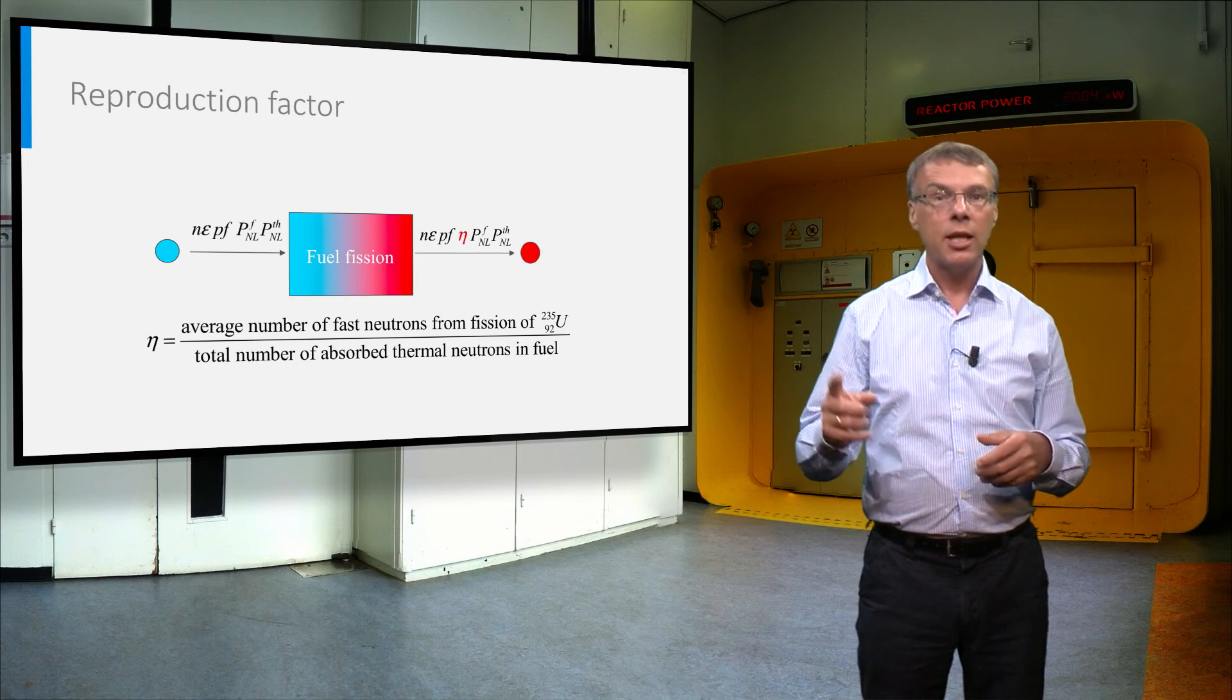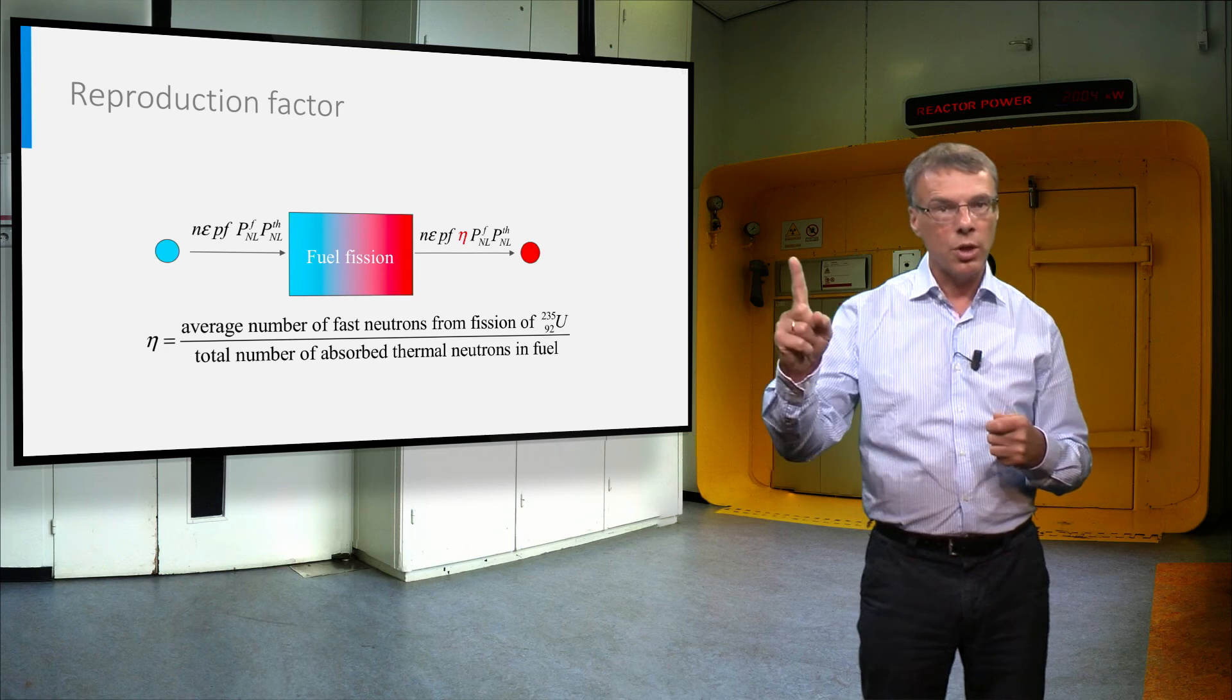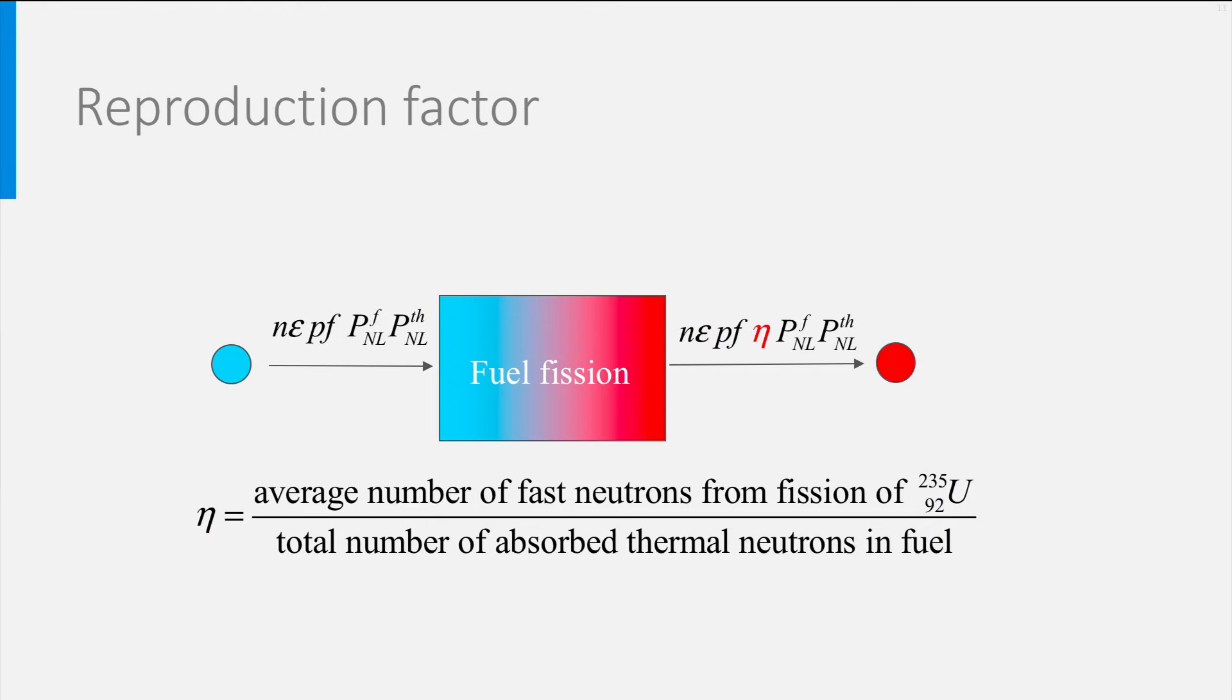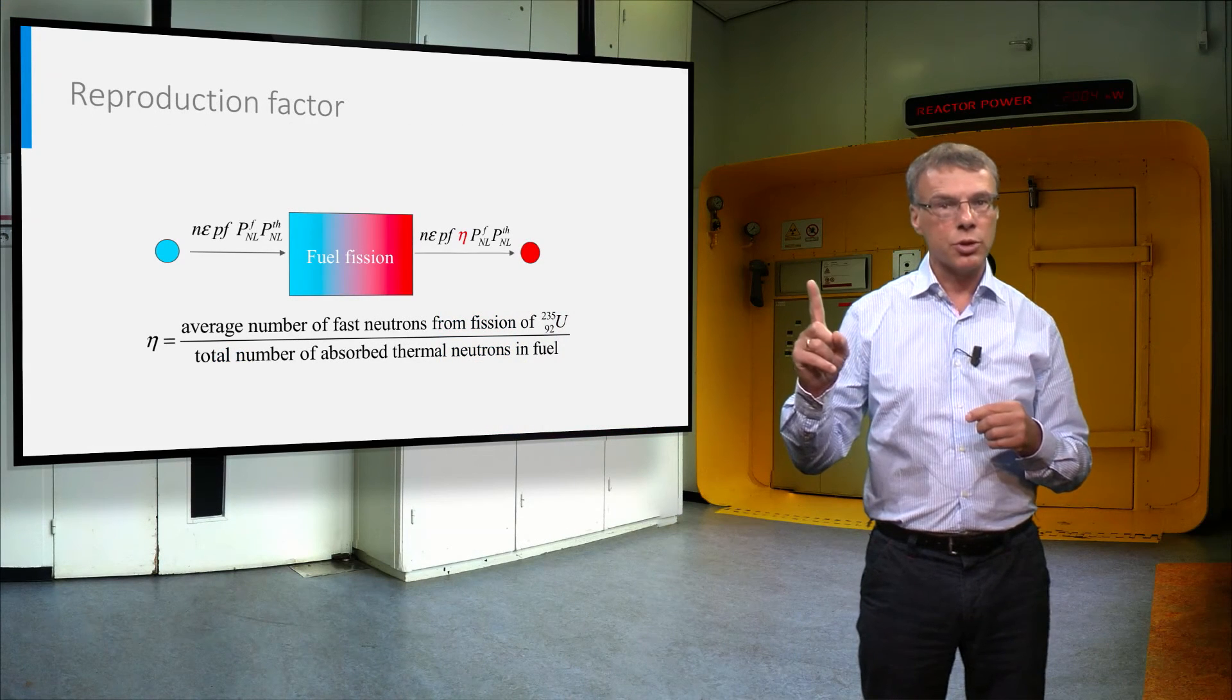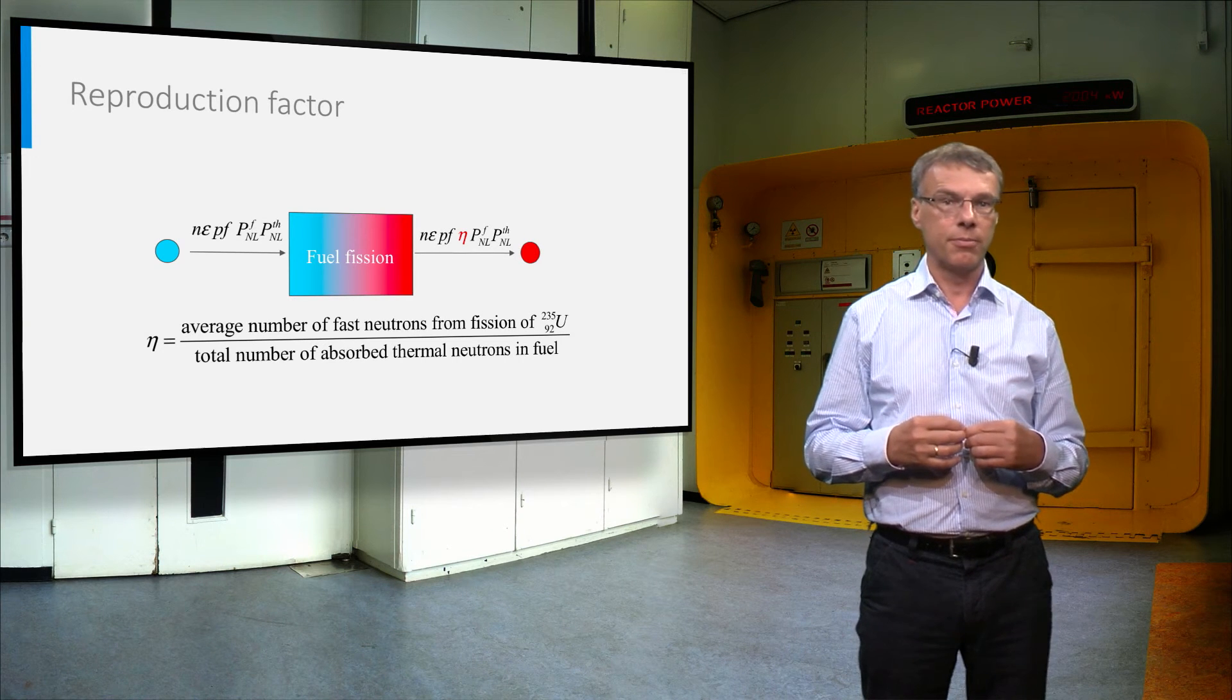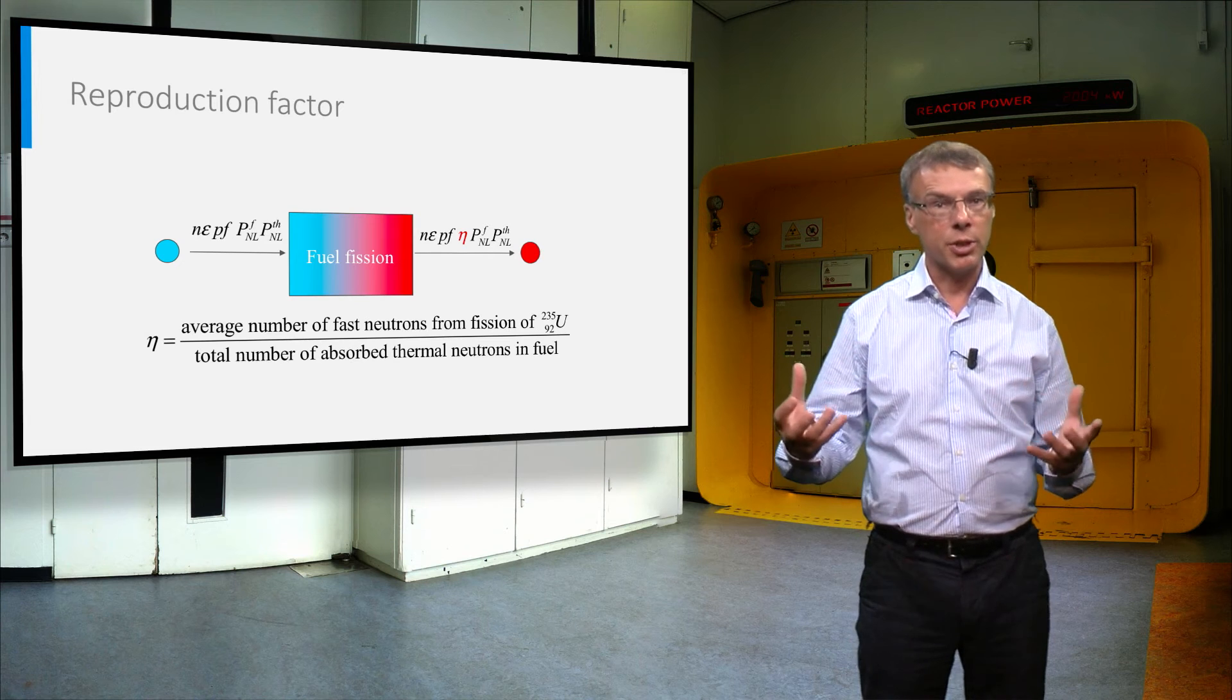And finally, we can calculate the number of fission neutrons released when one neutron is absorbed in the fuel. And this factor is called the neutron reproduction factor. Note that this is less than the neutrons released in a fission event, because part of the neutrons absorbed in the fuel will not lead to a fission event. The neutrons absorbed by the uranium-238 will disappear without fission.